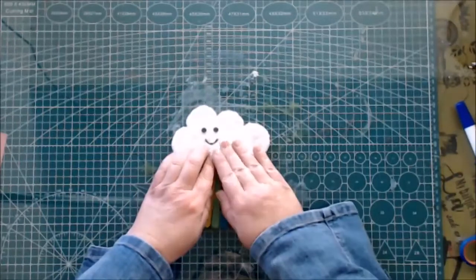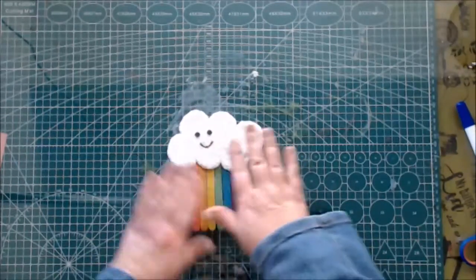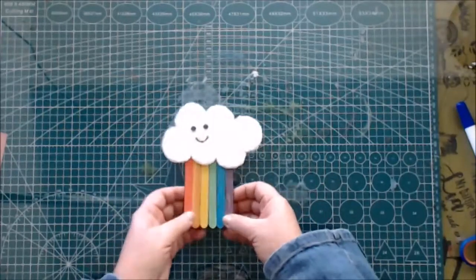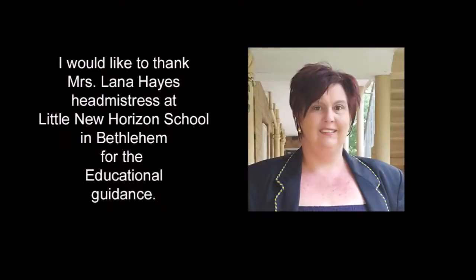There you have it. Look at it. A beautiful fridge magnet that you can put on your fridge in the kitchen and learn the colors of the rainbow every time you have dinner. I hope you enjoyed this lesson with me today and I cannot wait to see you tomorrow. Goodbye.